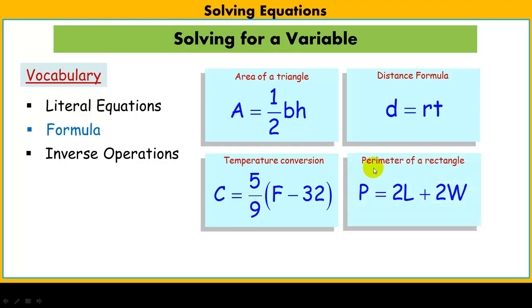There's also another basic one, the perimeter of a rectangle. That is the perimeter equals twice the length plus twice the width. So some basic formulas that you may be familiar with. These are all examples of literal equations.